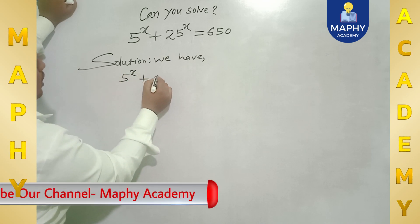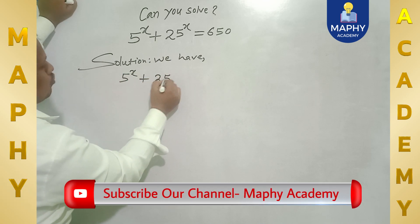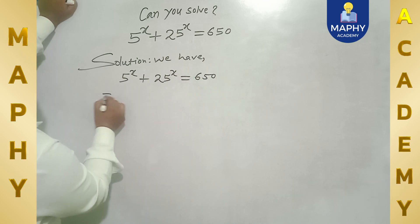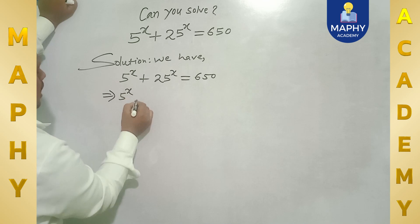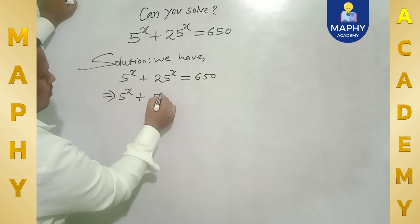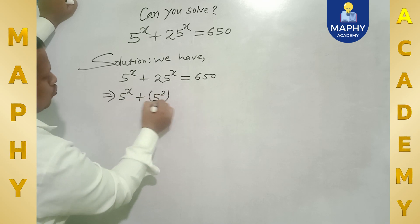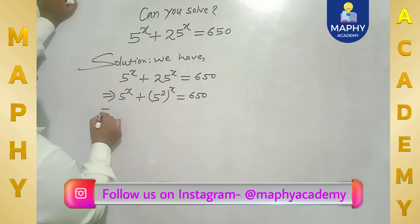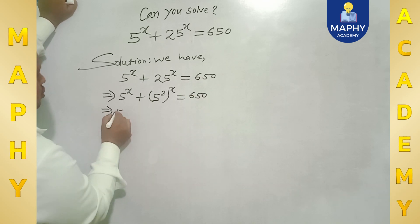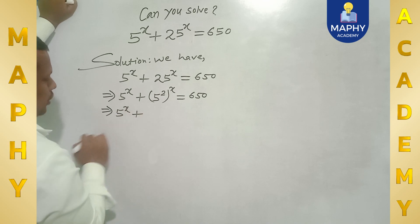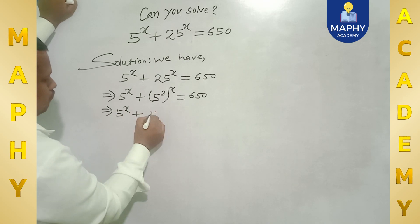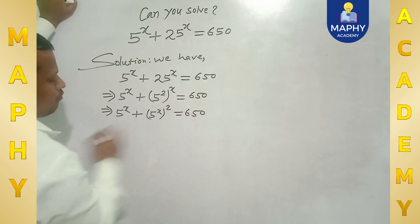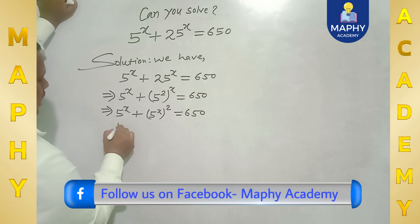5 to the power x plus 25 to the power x equals 650. This can be written as 5 to the power x plus (5 squared) to the power x is equal to 650. Using exponent laws, it can also be written as 5 to the power x plus 5 to the power 2x is equal to 650.